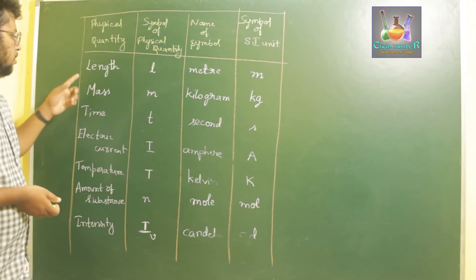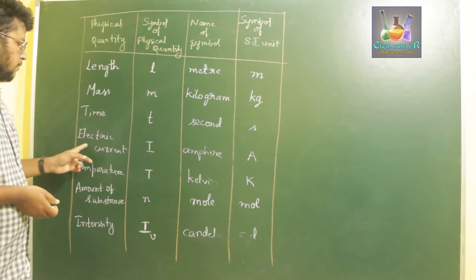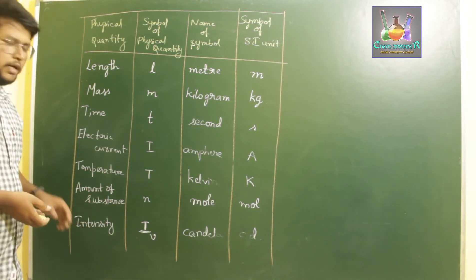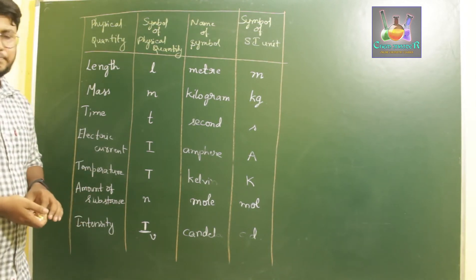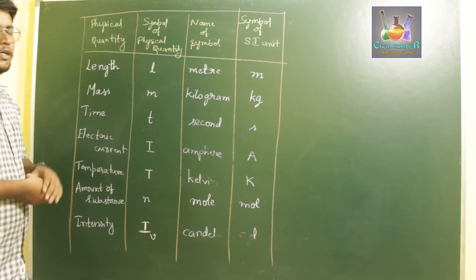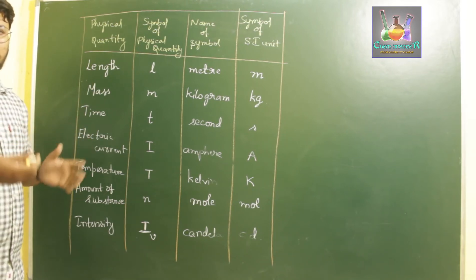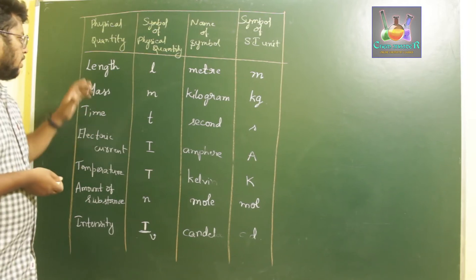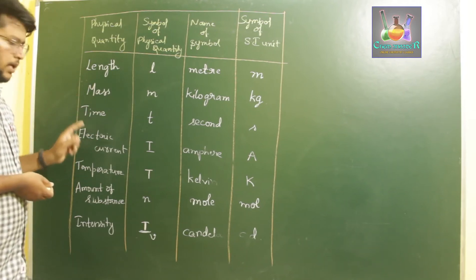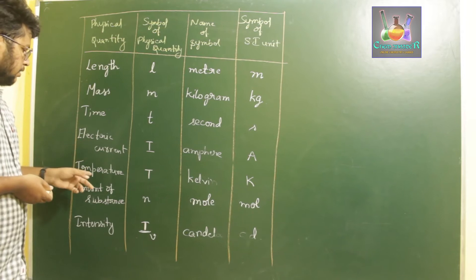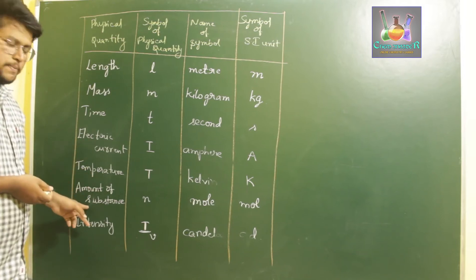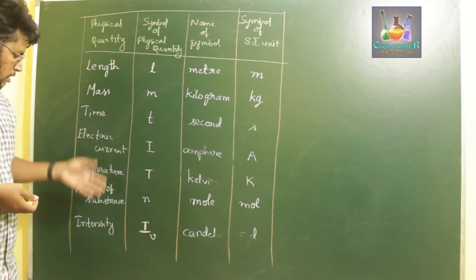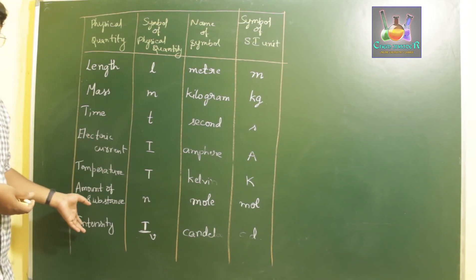The seven basic physical quantities are: length, mass, time, electric current, temperature, amount of substance, and luminous intensity. Temperature can also be called thermodynamic temperature, and intensity is specifically called luminous intensity.